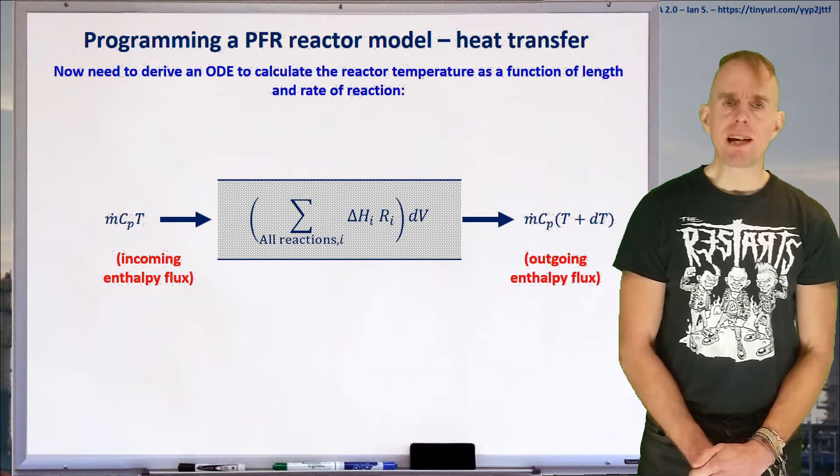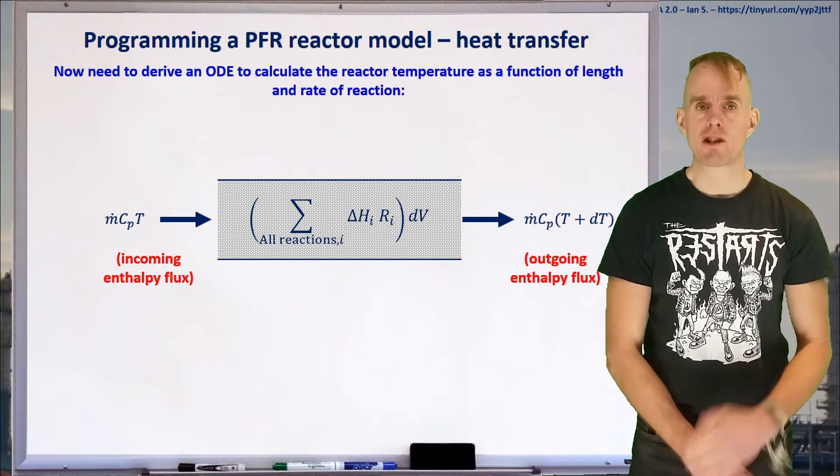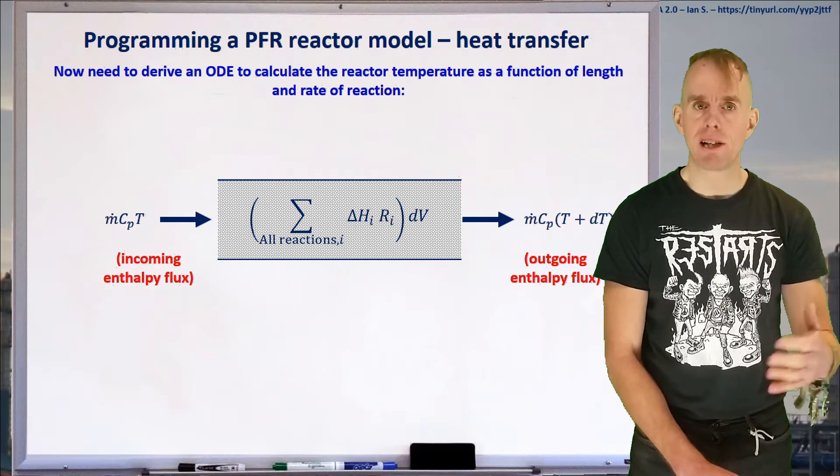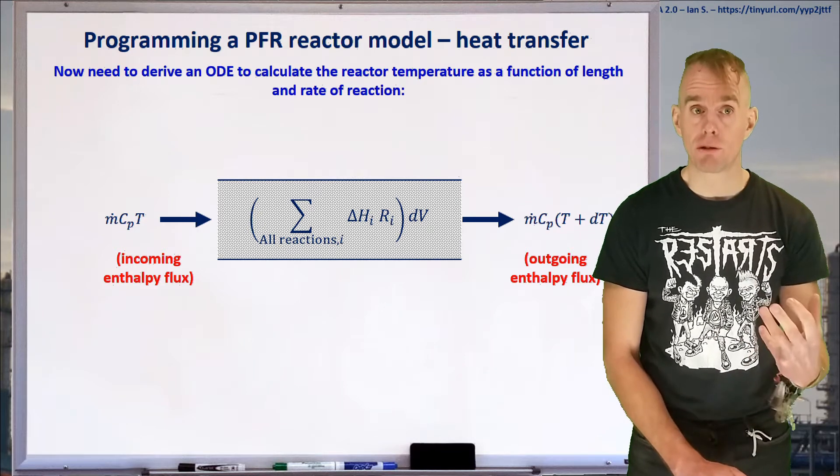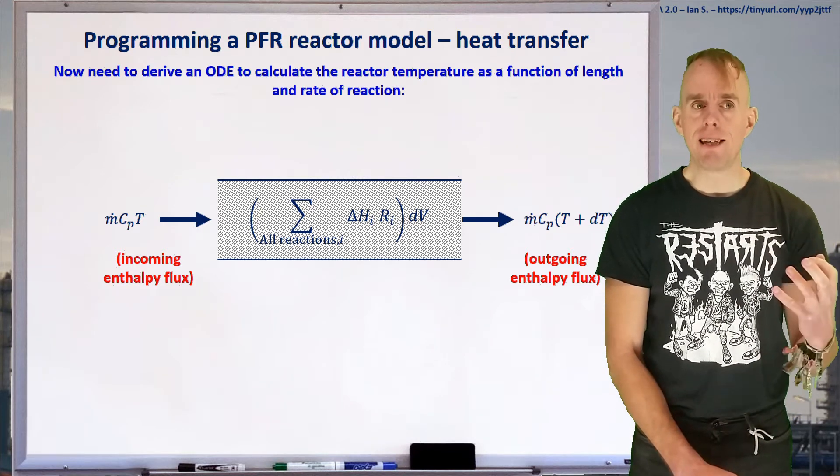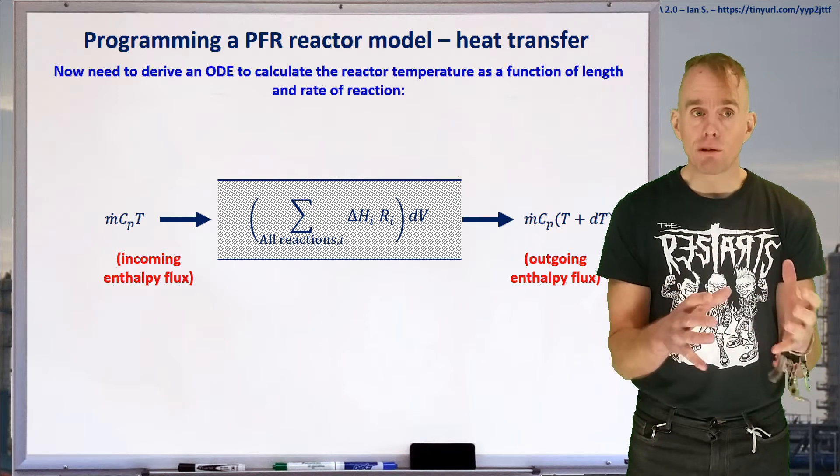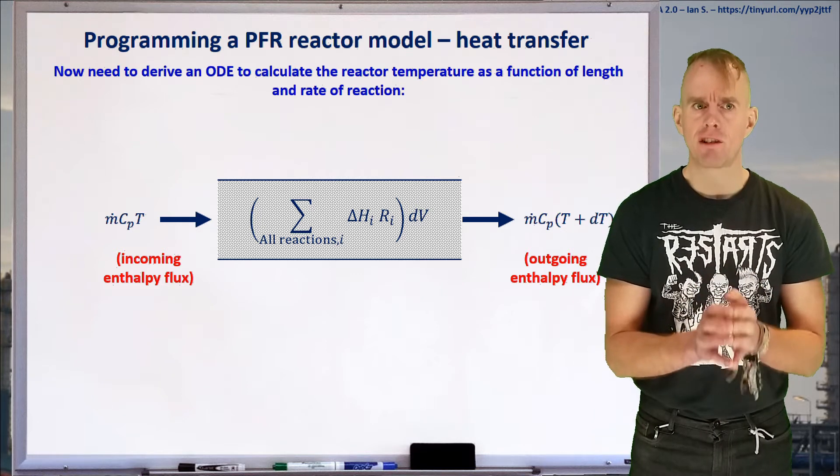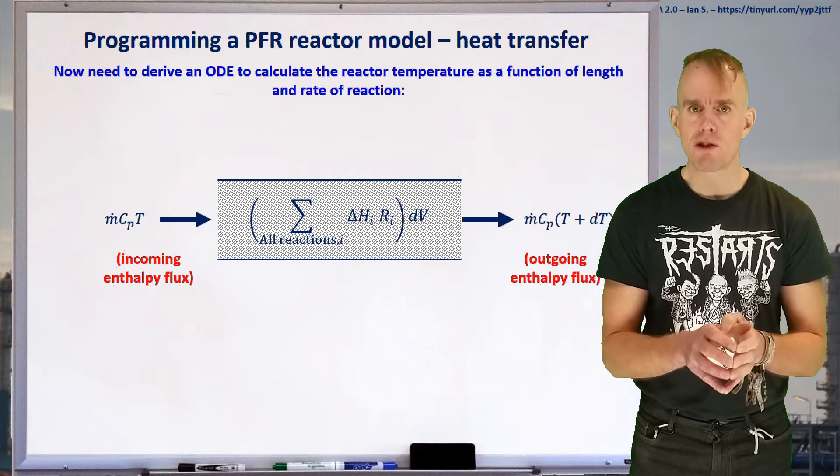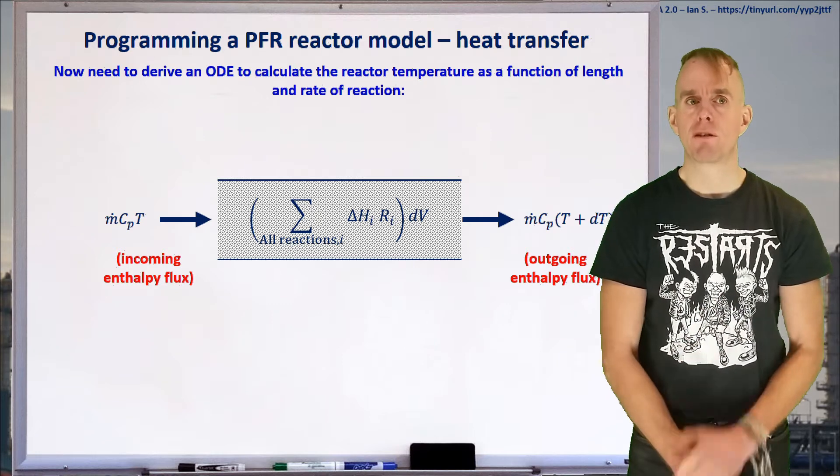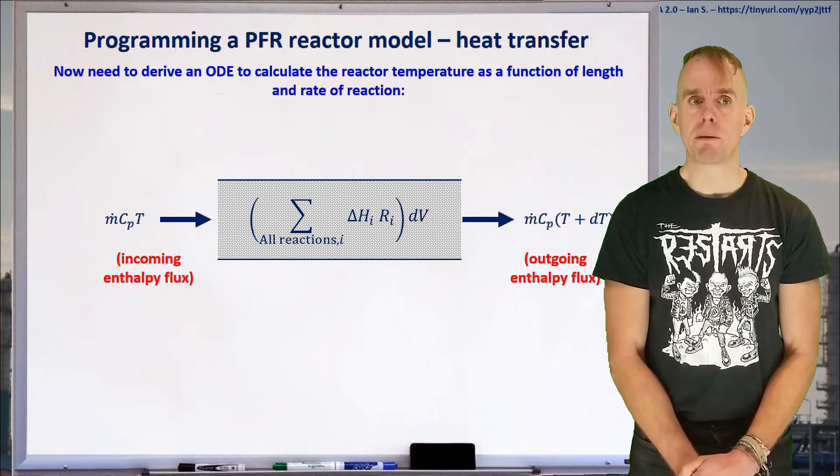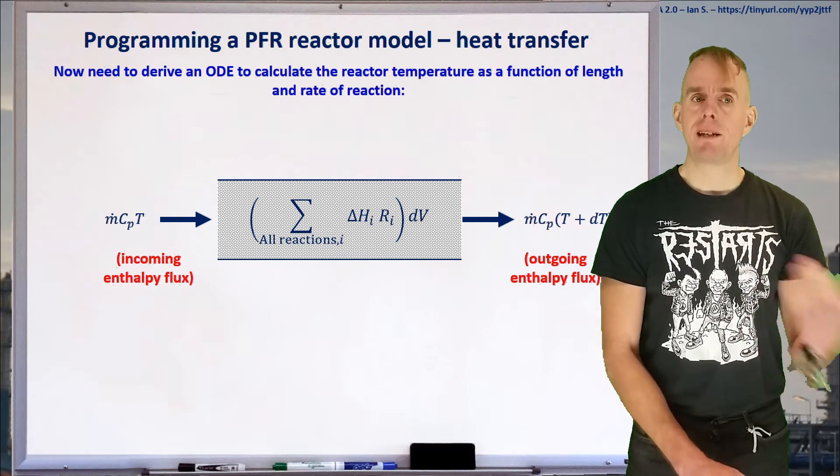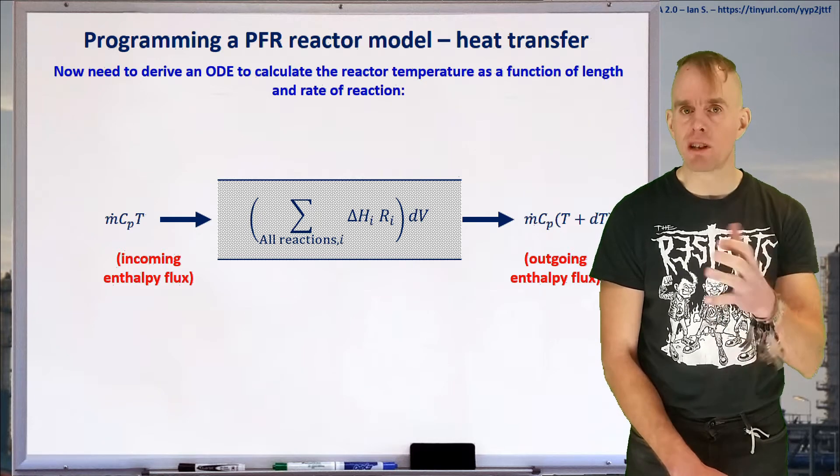Let's now think about the heat transfer situation. Here on the whiteboard is a sketch of the heat transfer. We have an incoming enthalpy flux, mass flow rate M dot. M dot CP T, my incoming enthalpy flux, is added to or subtracted by whatever heat is given off by my reactions. Each reaction has a reaction enthalpy, so there's heat generation or consumption that is the product of reaction enthalpy multiplied by reaction rate for each species, summed and multiplied by dV. This gives an outgoing enthalpy flux M dot CP(T + dT).